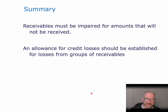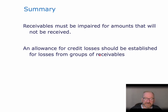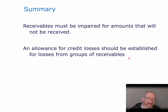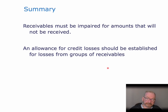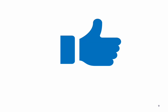So we reduce our profits. In summary: receivables must be impaired for amounts that will not be received. An allowance for credit losses should be established for losses from groups of receivables, done by assessing how risky your receivables are and using statistical data to work out who didn't pay in the past and making an estimate from that. Thanks for watching. Remember to like and subscribe if you found this content helpful.